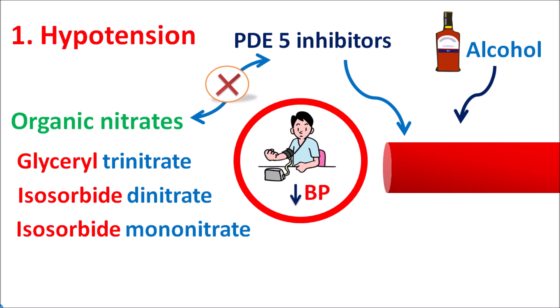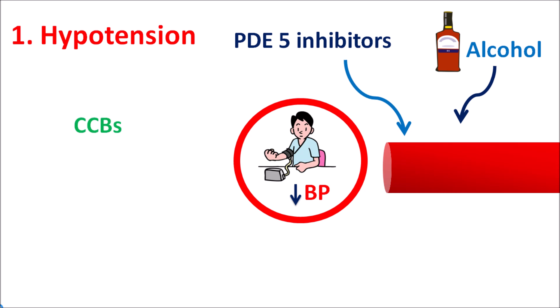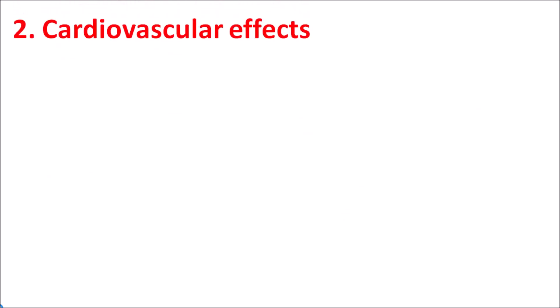Organic nitrates are strictly contraindicated with PDE5 inhibitors. On the other hand, drugs like CCBs, calcium channel blockers, and other vasodilators like alpha-1 blockers can also produce hypotension but are not contraindicated — instead, they should be carefully used and dosage adjustments should be made to reduce the hypotensive effect.